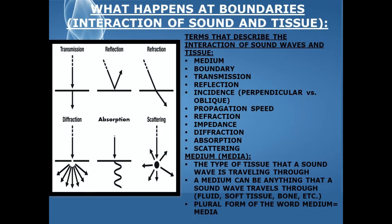So what happens at these boundaries? How does the sound wave and the tissue interact? It's important to talk about some terms that describe the interaction of sound waves and tissue. There's medium, boundary, transmission, reflection, incidence — which is broken down into perpendicular versus oblique incidence — propagation speed, refraction, impedance, diffraction, absorption, and scattering.